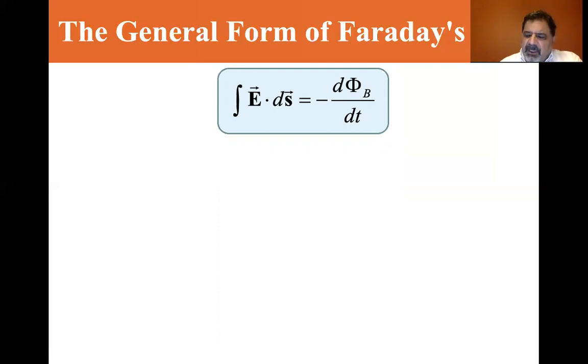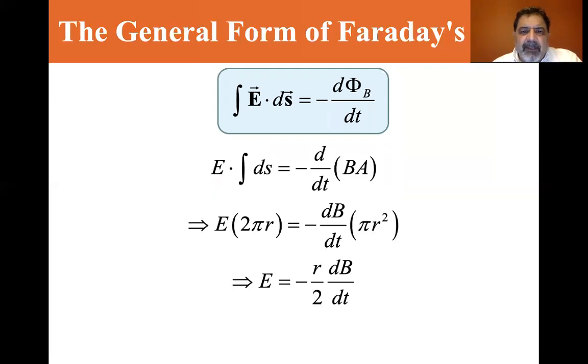And if we integrate, we know that Φ is equal to BA cosine θ. We'll assume that cosine θ in this case is one. So E·ds, we're going to integrate around ds. So E·∫ds is equal to minus d/dt of the magnetic field B times the area. If we integrate around a loop, that's E times 2πr